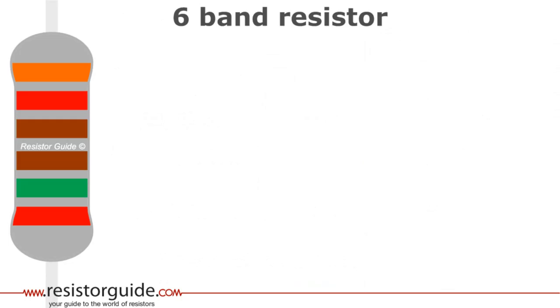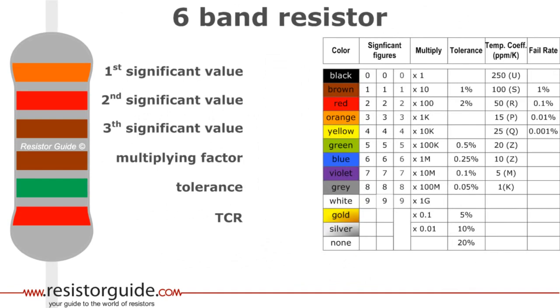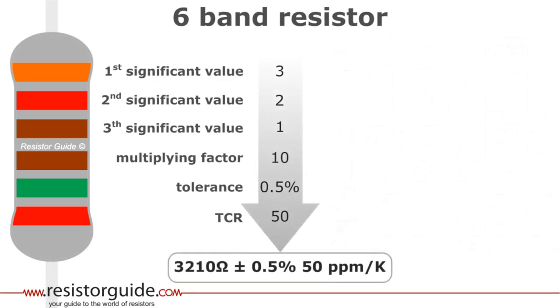Even resistors with six bands exist. Normally, the bands represent the first significant value, the second significant value, the third significant value, the multiplying factor, the tolerance and the temperature coefficient of resistance. However, for military specifications, sometimes the failure rate is used. The different values can be read from the table and the final resistor value is 3210 ohms with a tolerance of 5% and a temperature coefficient of 50 ppm per Kelvin.